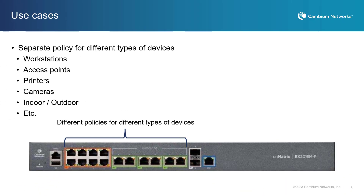PBA can be used to automate the configuration that is necessary when adding, moving, or changing network connections. For example, policies can be created for all Wi-Fi access points, all video surveillance cameras, or any type or class of device. You can have a different policy for your indoor access points versus your outdoor access points, or, if preferred, policies targeting devices from a specific manufacturer.